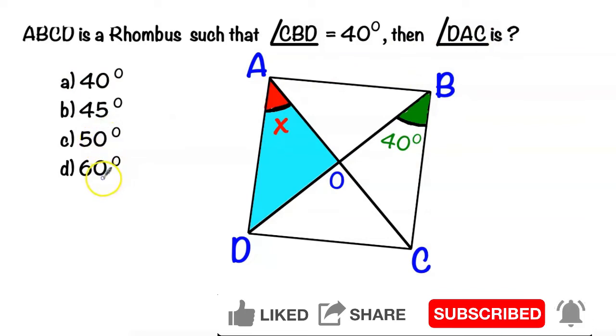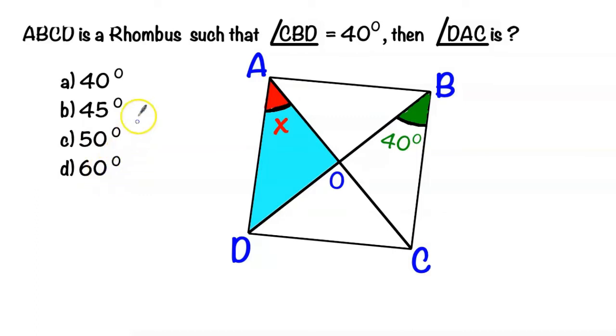Pause the video if you want to give it a try. Now let's go ahead into the solution. Since ABCD is a rhombus, then opposite sides are parallel. In this case, AD is parallel to BC.